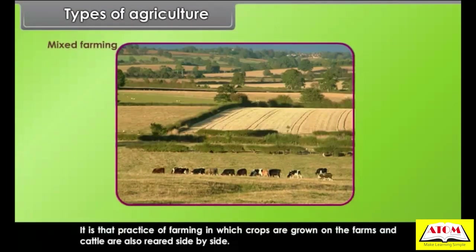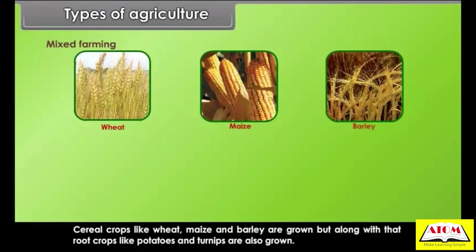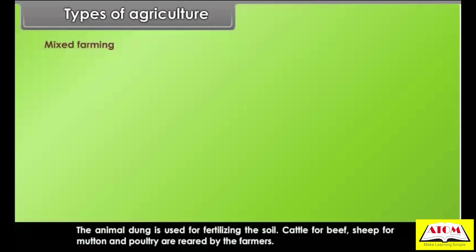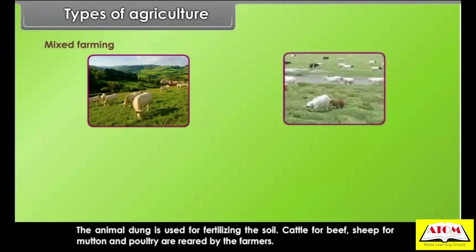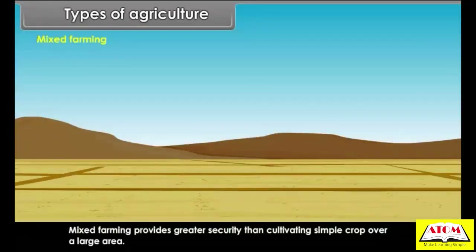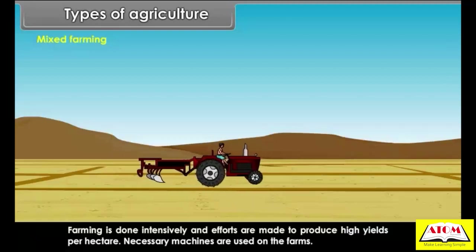Mixed farming is the practice of farming in which crops are grown and cattle are also reared side by side. This type of farming is quite popular where the size of the farm is moderate. Cereal crops like wheat, maize and barley are grown, but also root crops like potatoes and turnips. Animal dung is used for fertilizing the soil; cattle for beef, sheep for mutton, and poultry are reared by the farmers. Mixed farming provides greater security than cultivating a single crop over a large area, and efforts are made to produce high yields per hectare.